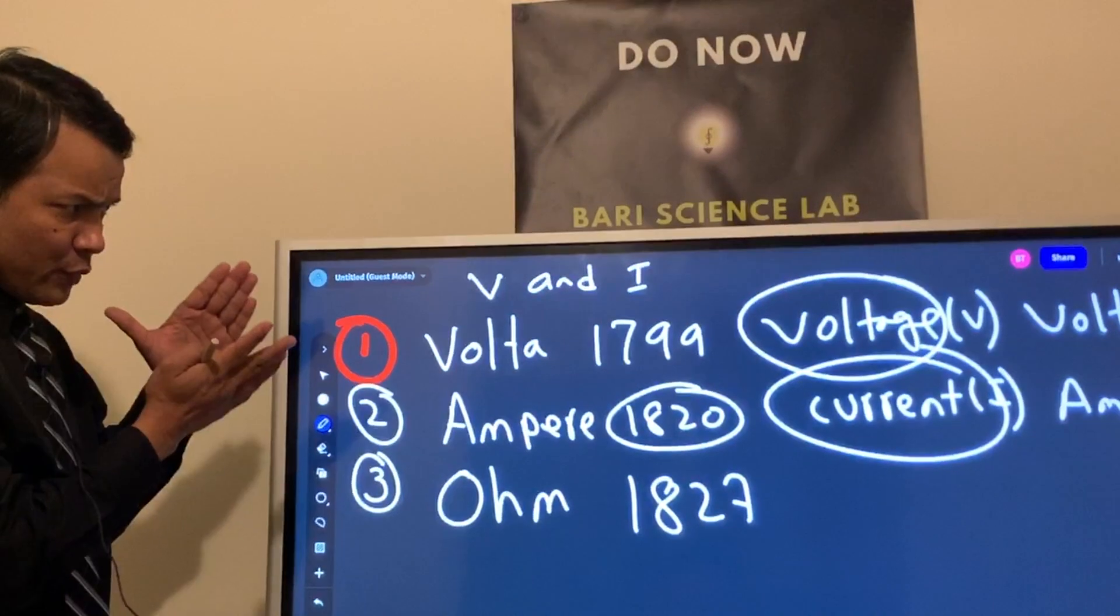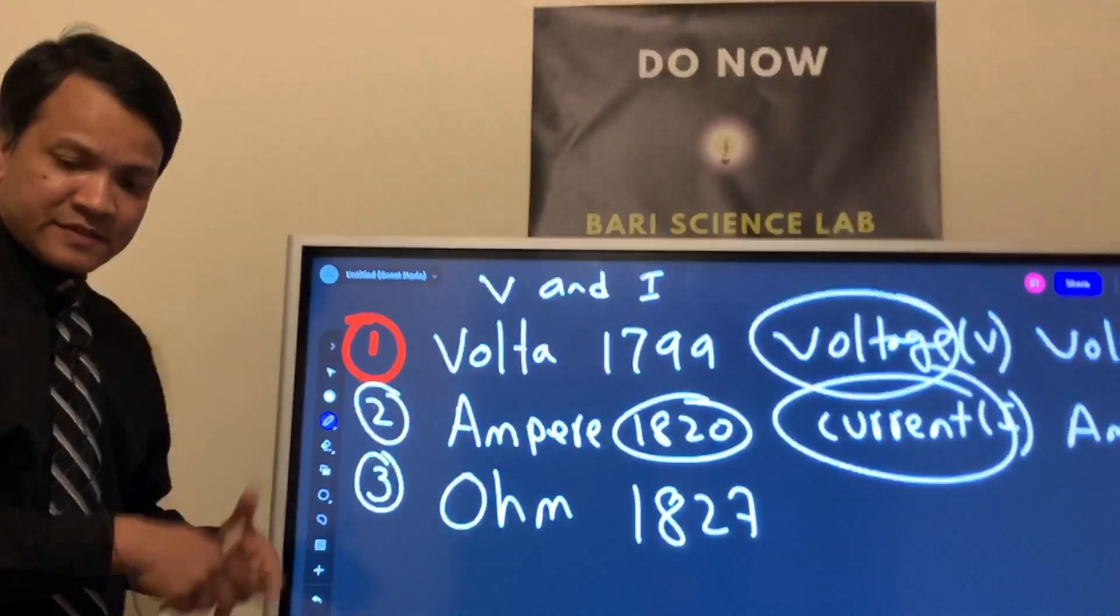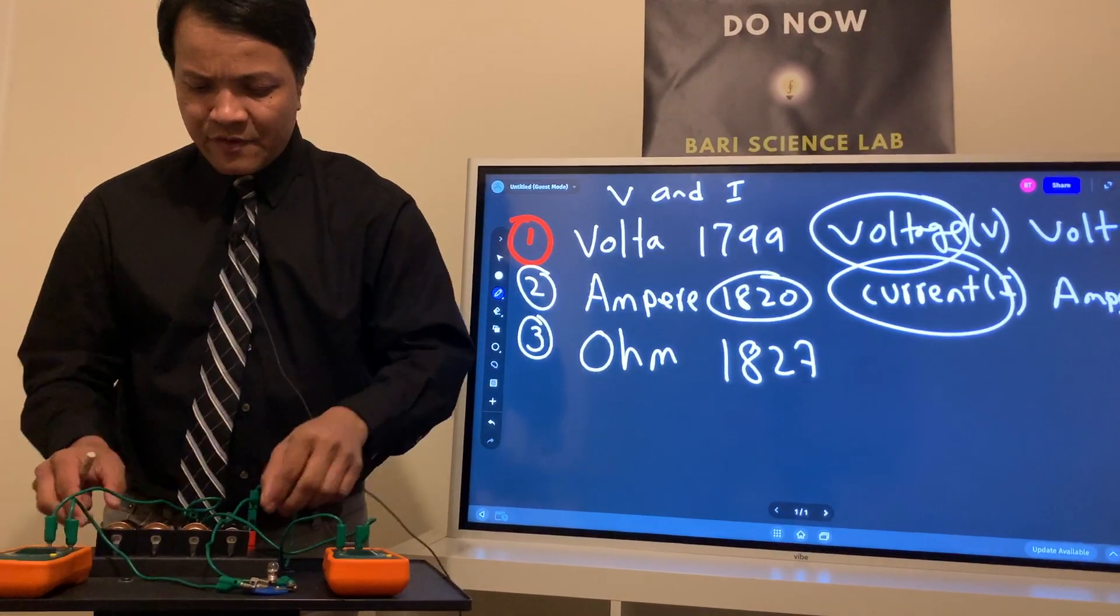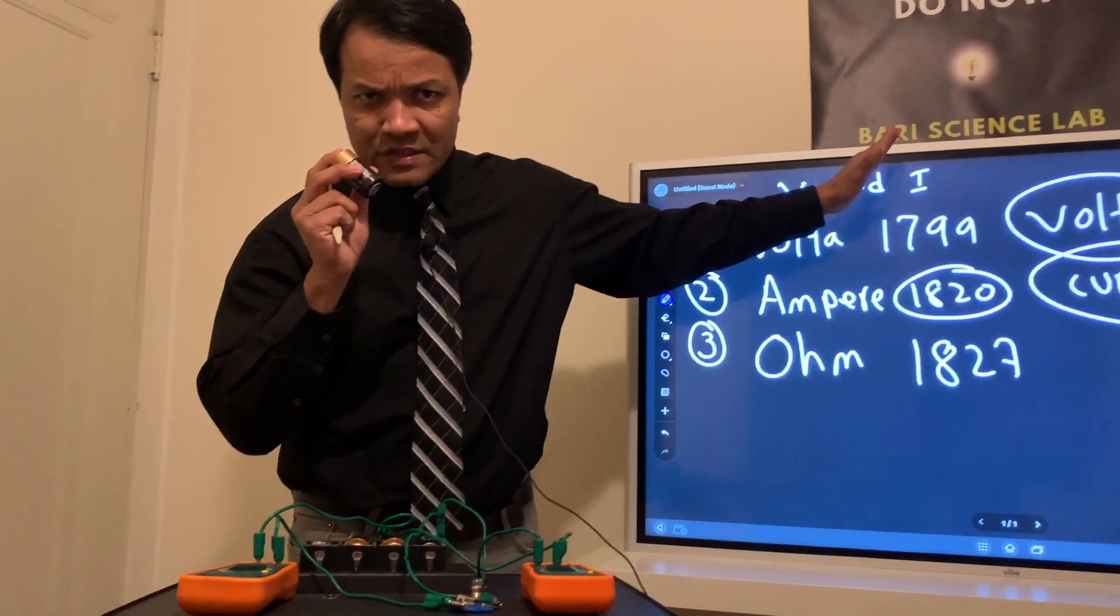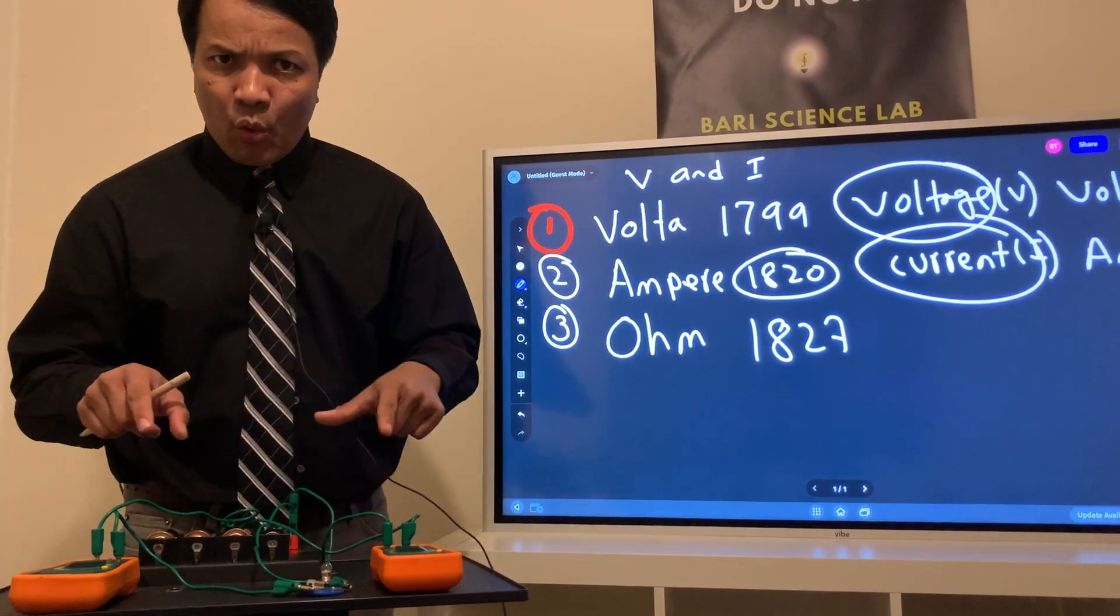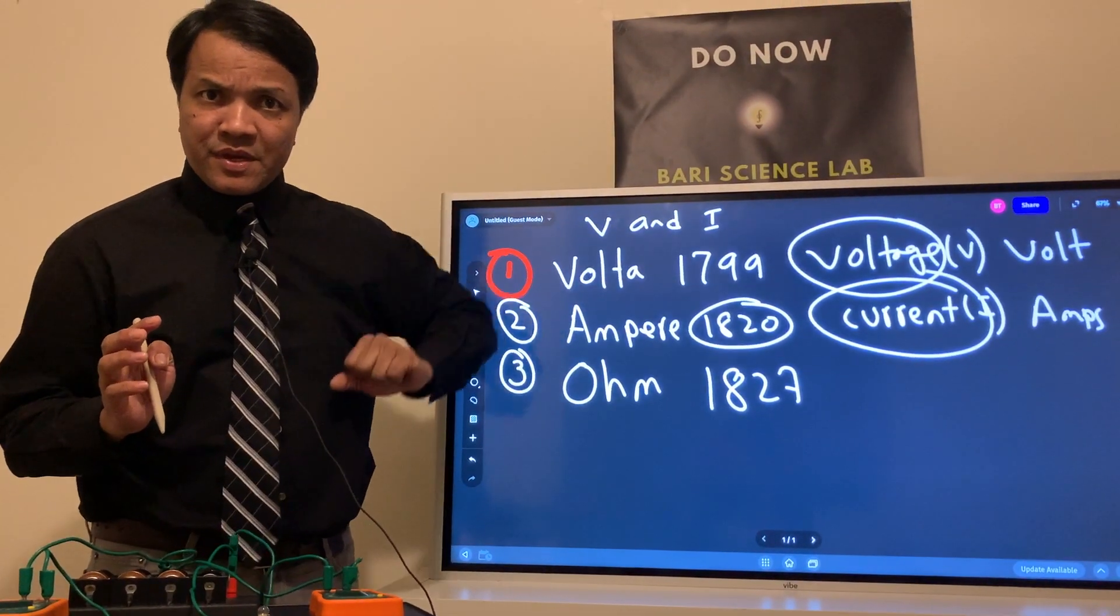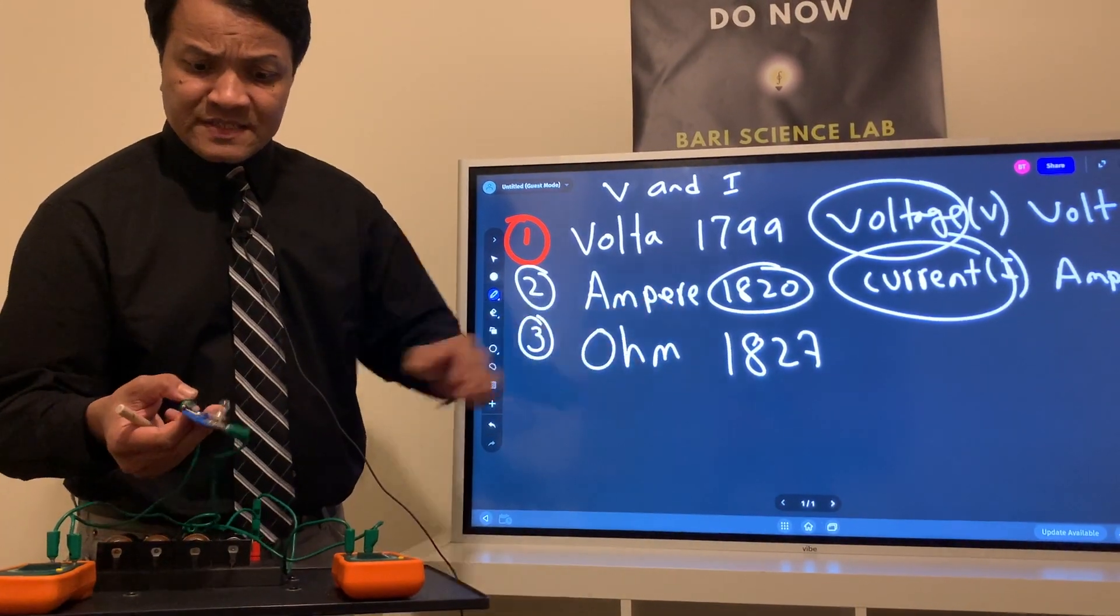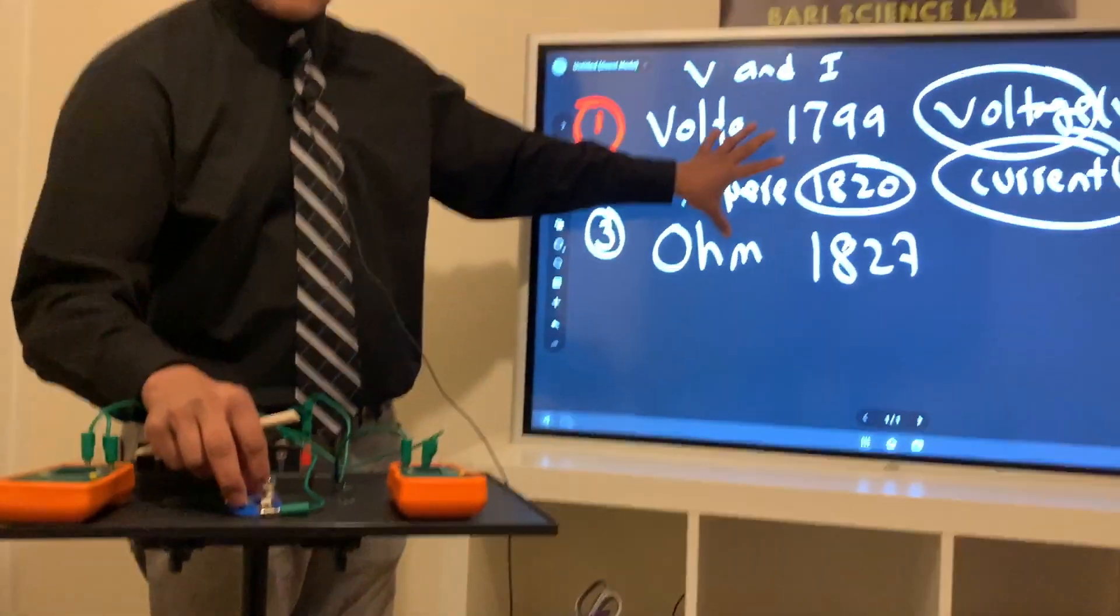Now we're going to put together the study of three people in electric circuit. Just like you see over here, this is an electric circuit. I have the battery, which was invented by Alessandro Volta. I have the current flow in the wire from positive terminal to the negative terminal, which was discovered by Ampere in 1820. And finally, I have the resistance inside the resistor sitting in the bulb, which was discovered by Ohm.